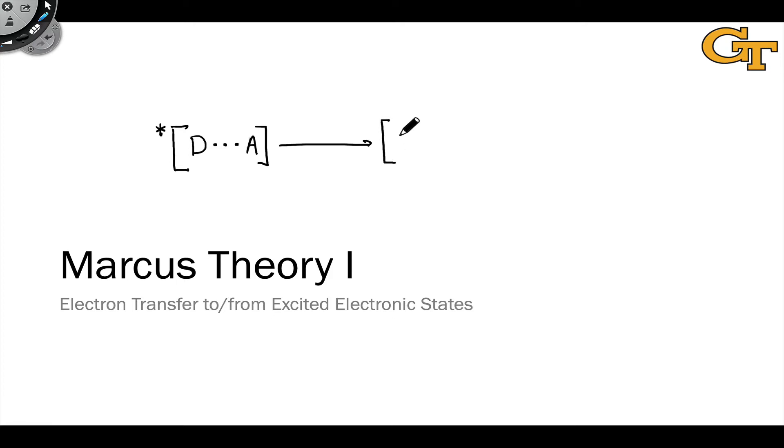We have D dot plus and A dot minus in some kind of close association. The subject of this video and the next is how this electron transfer process, this actual reaction event, actually takes place.